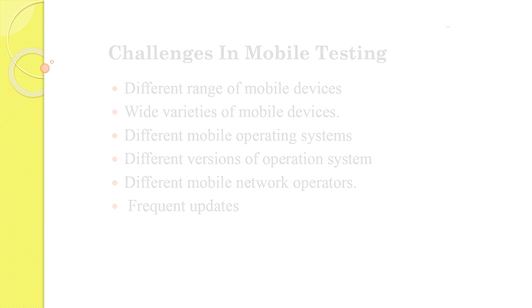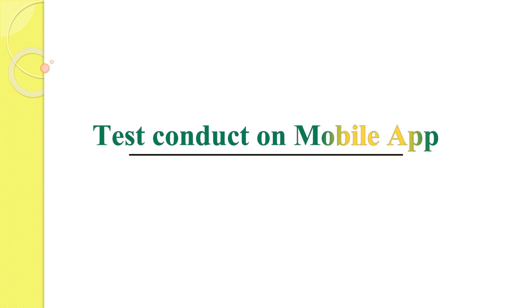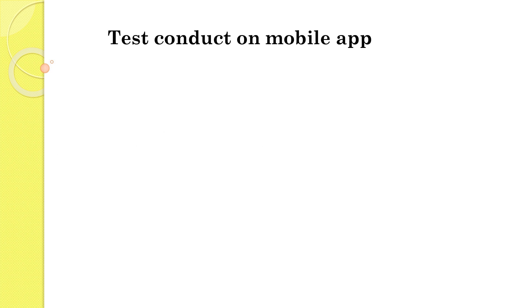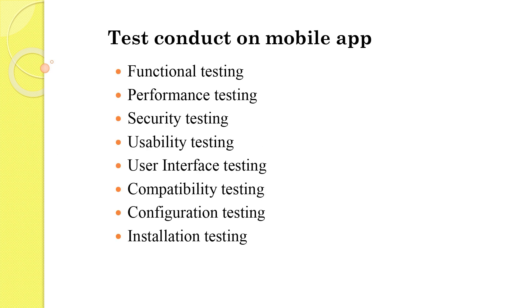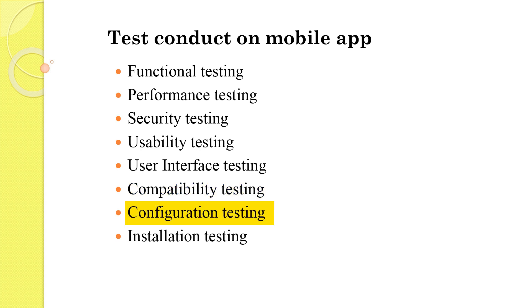The kinds of testing performed on mobile apps include functional testing, performance testing, security testing, usability testing, user interface (UI) testing, compatibility testing, and configuration and installation testing.